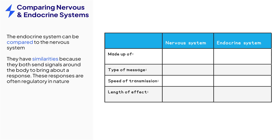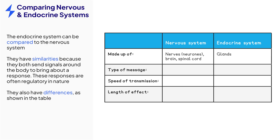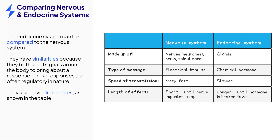A common exam question is to compare the nervous and endocrine systems. Both send signals around the body to help regulate conditions inside the body as part of homeostasis, and both trigger responses. However, the nervous system is made up of nerves, the brain, and spinal cord, whereas the endocrine system is made of glands. The nervous system sends electrical impulses through neurons, whereas the endocrine system sends chemical hormones in the blood. The nervous system sends signals much faster, but the length of effect from the endocrine system is much longer.